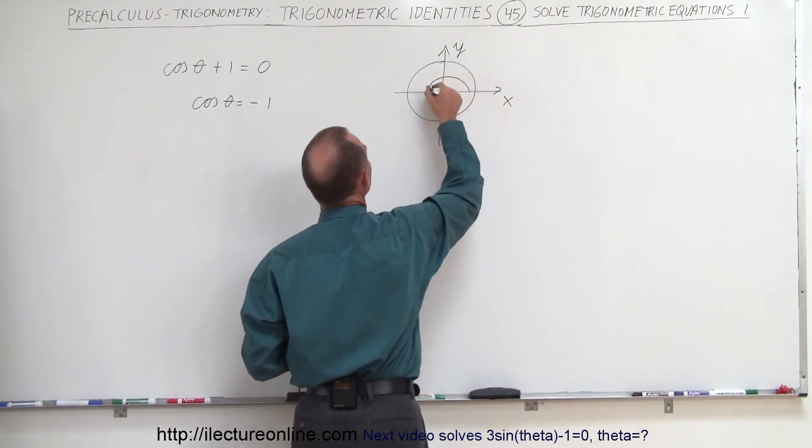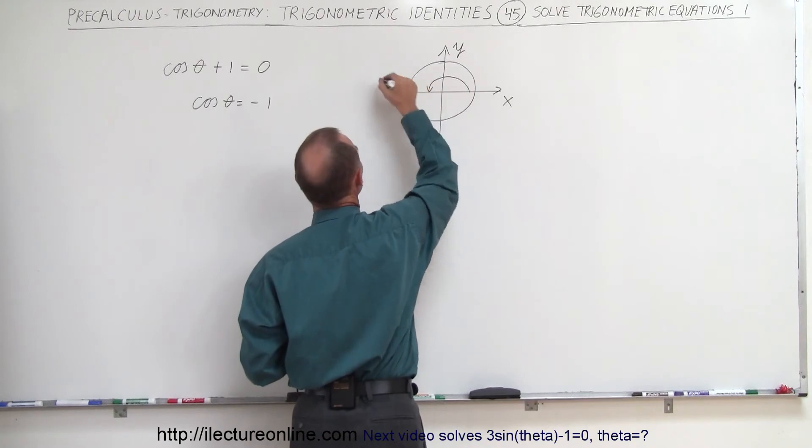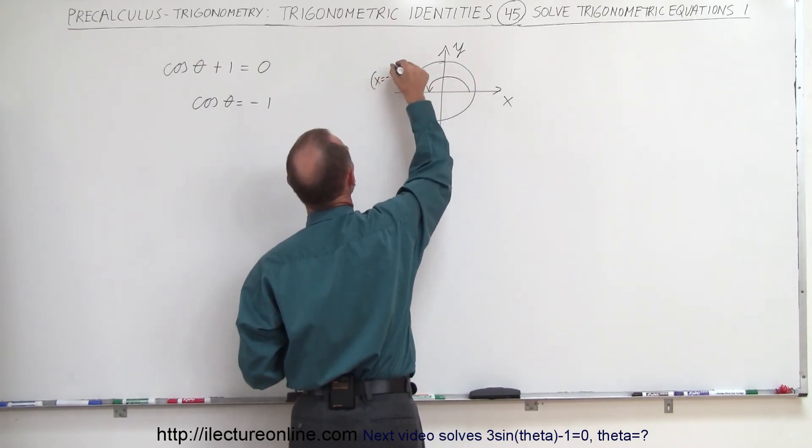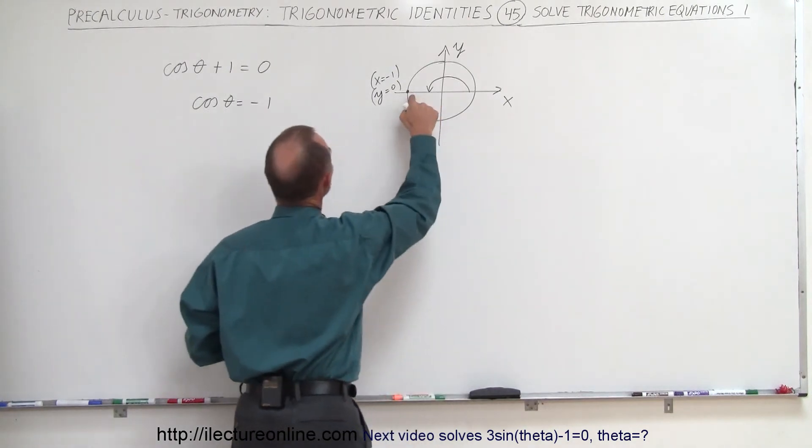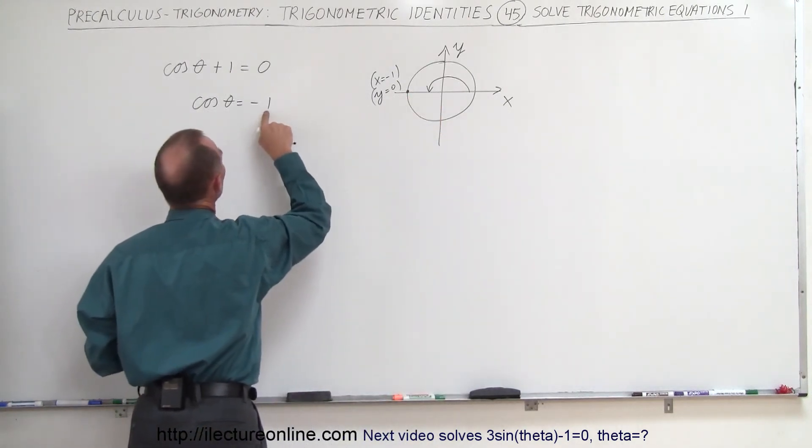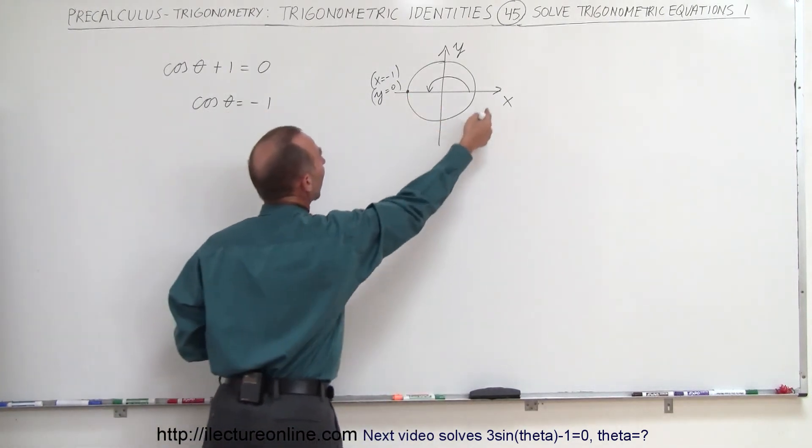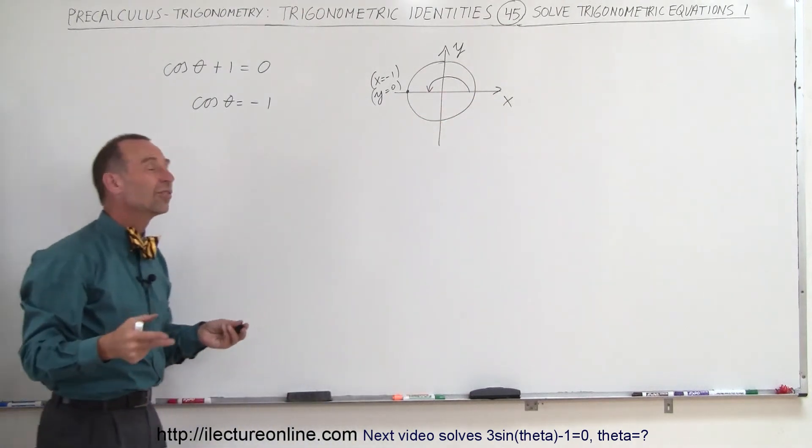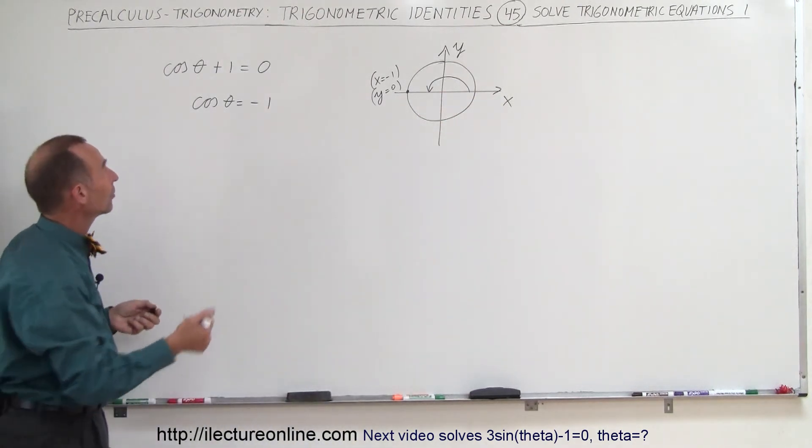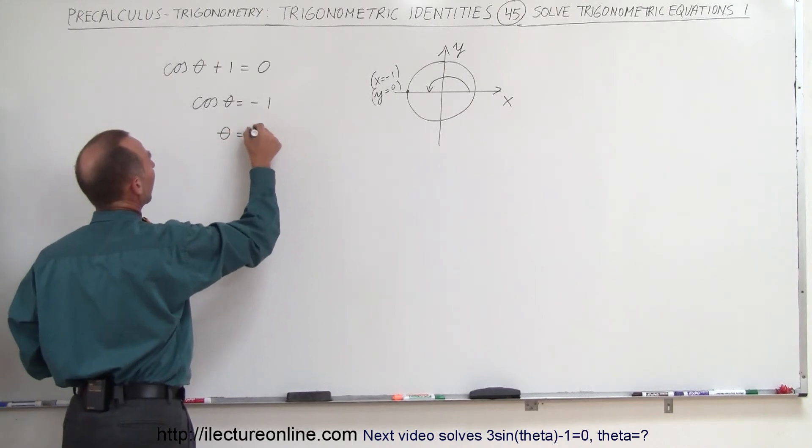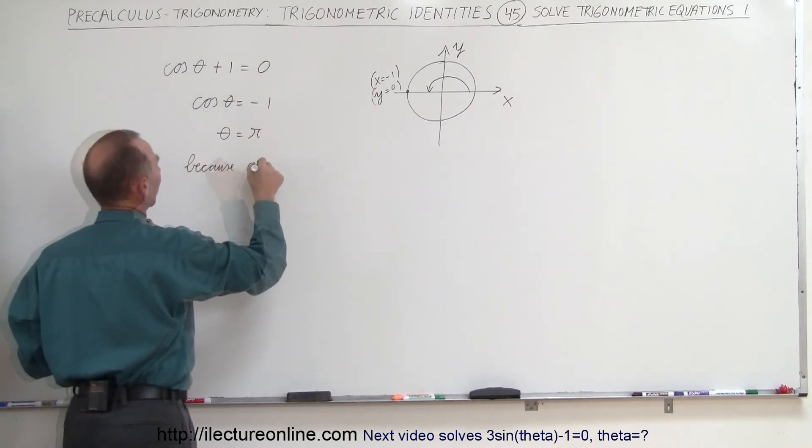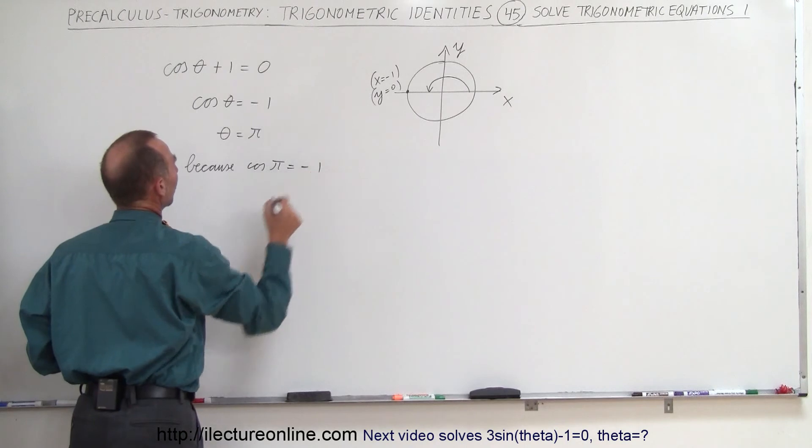When we go 180 degrees and we get to this point right here, that's where the x-value is equal to negative 1 and the y-value is equal to 0. That's what we're looking for. When the x-value equals negative 1, then theta must be 180 degrees, which in this case, 180 degrees would be π. So theta must equal π because the cosine of π equals negative 1.